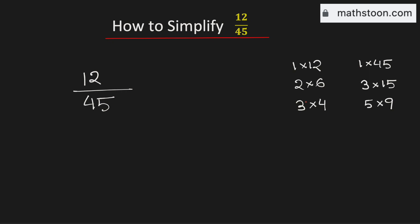See that 3 is the greatest one which is common in these two lists. Therefore, the greatest common factor of 12 and 45 is 3.